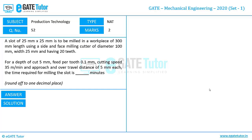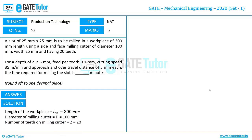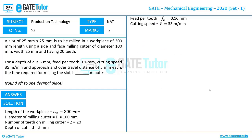Let us look at the solution. It is given that the length of the workpiece is 300 mm — consider that as aw. The diameter of the milling cutter d = 100 mm. The number of teeth on the milling cutter z = 20. The depth of cut d = 5 mm. Feed per tooth fz = 0.1 mm. Cutting speed v = 35 meter per minute. Approach a = 5 mm and over-travel distance o = 5 mm.